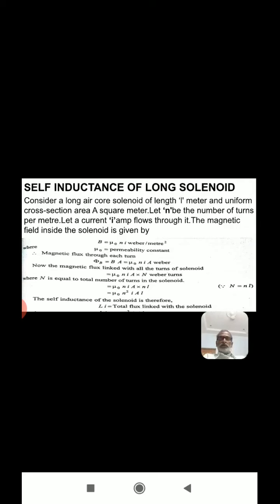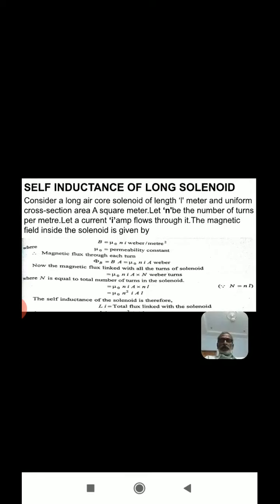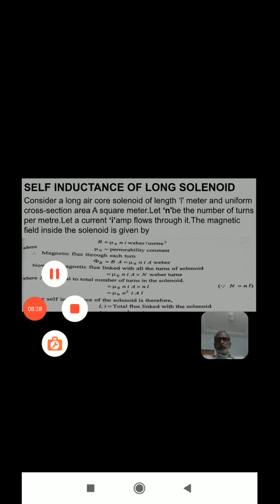So the total magnetic flux linked with all turns of the solenoid is equal to mu naught N times the total number of turns, where capital N is equal to the number of turns in the solenoid, which equals small n (turns per unit length) times the length of the solenoid. Thus, the self-inductance of the solenoid, by comparing with phi_B equals Li, gives L equal to mu naught N squared A L.